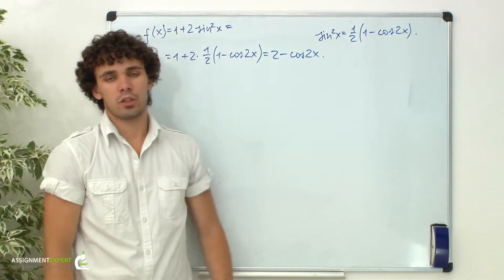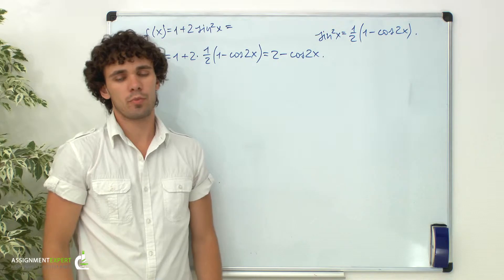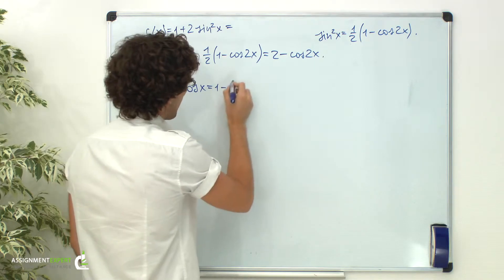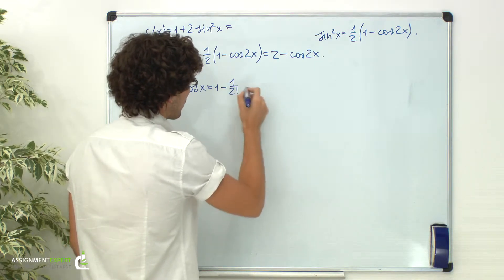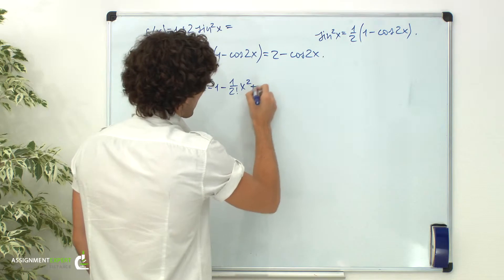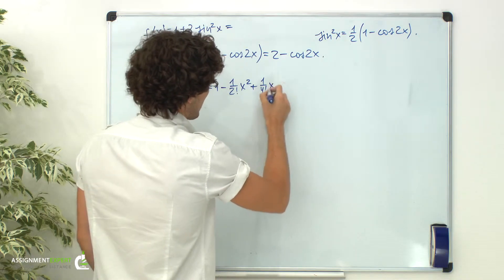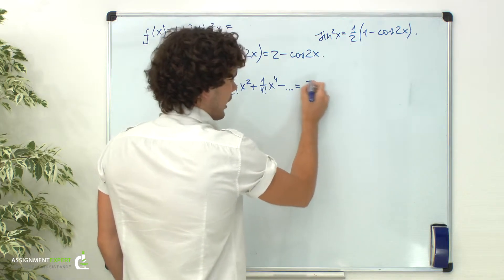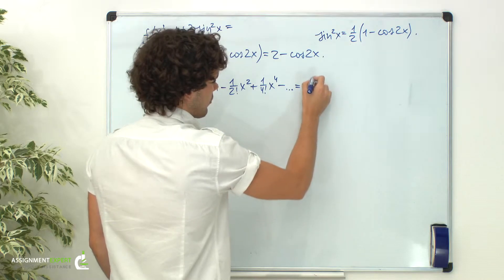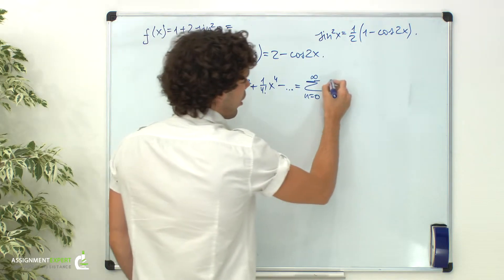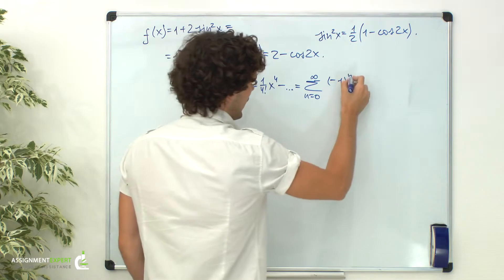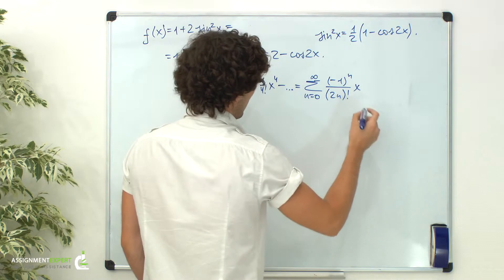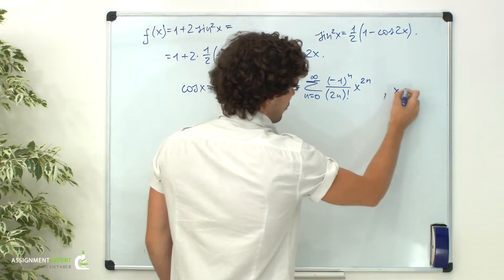So we obtain the cosine function, and we know its expansion from previous examples. Cosine of x equals 1 minus 1 over 2 factorial times x squared plus 1 over 4 factorial times x raised to the 4th power, and so on. Or in compact sigma notation, this is the sum for n from 0 to infinity of negative 1 raised to the power of n over the factorial of 2n times x raised to the power of 2n. And this is for real x.